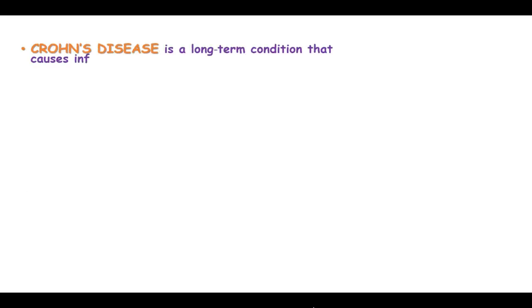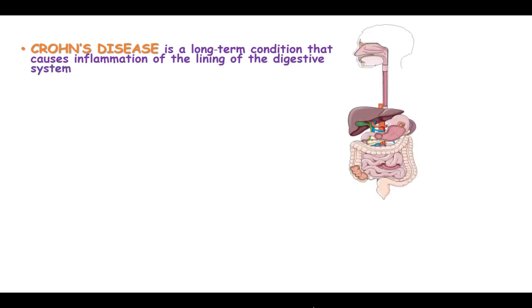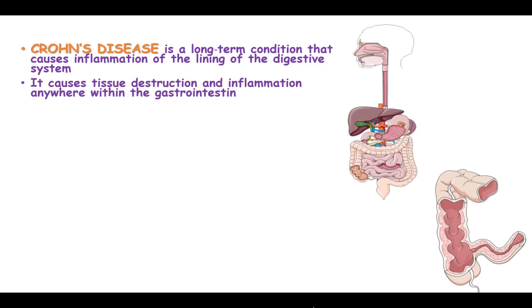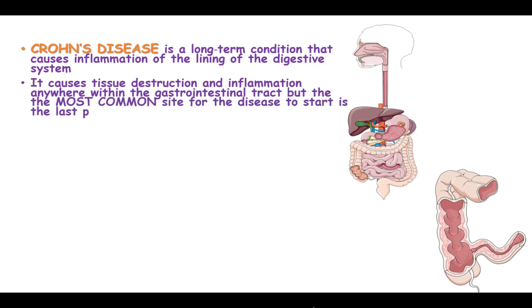Crohn's disease is a long-term condition that causes inflammation of the lining of the digestive system. It causes tissue destruction and inflammation anywhere within the gastrointestinal tract, but the most common site for the disease is the last part of the small intestine known as the ileum.